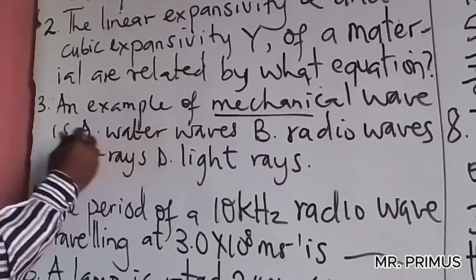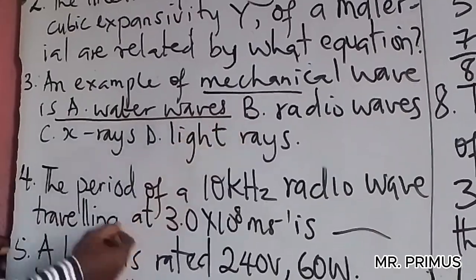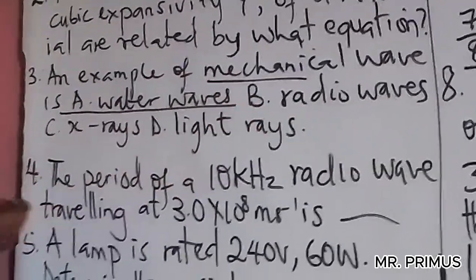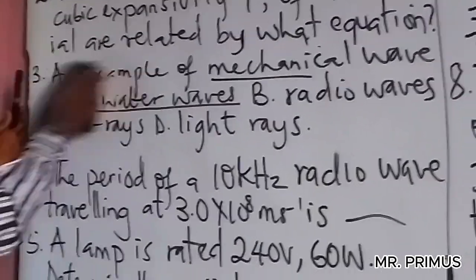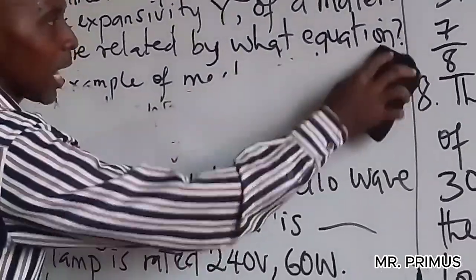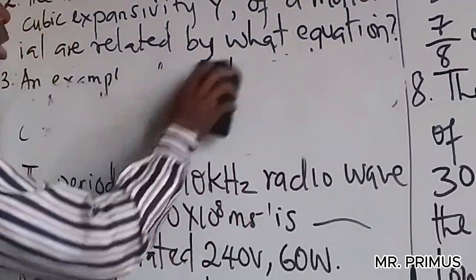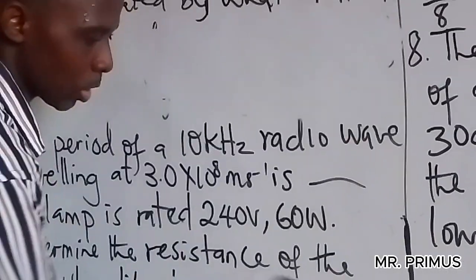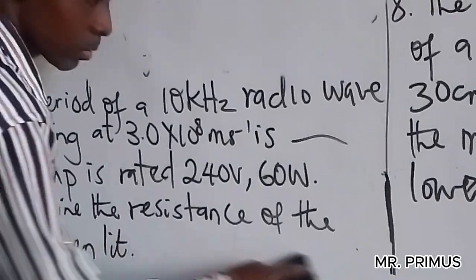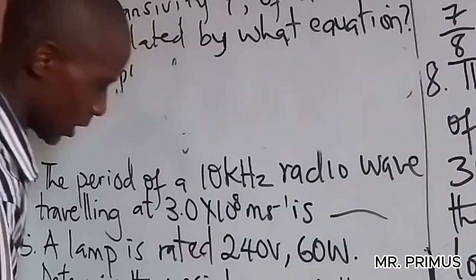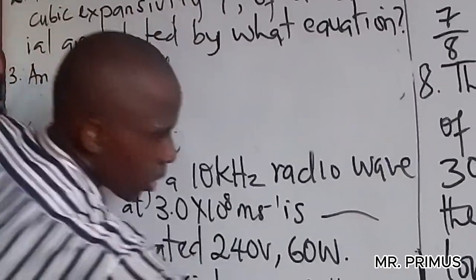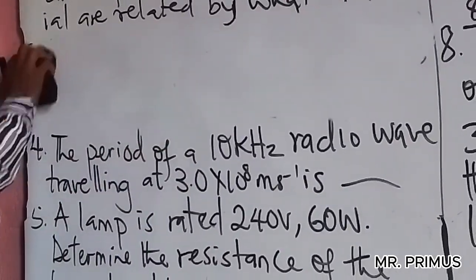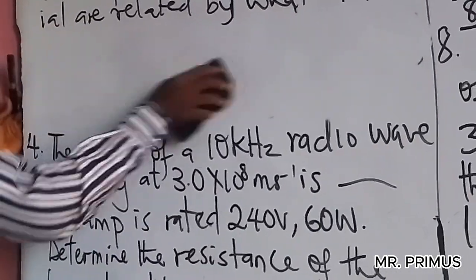So this one is solved. The answer is water waves — that is the mechanical wave. Radio waves, x-rays, and light rays are electromagnetic waves. Let me clean the board now so we can have space to solve the next question quickly.